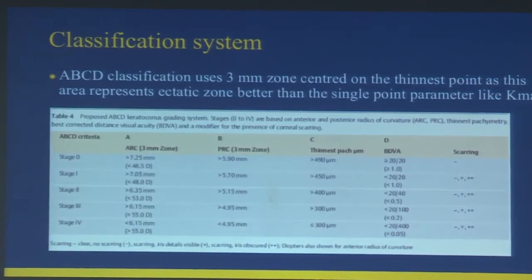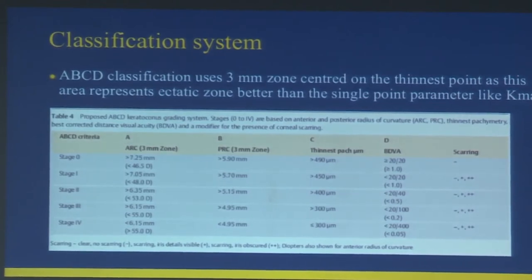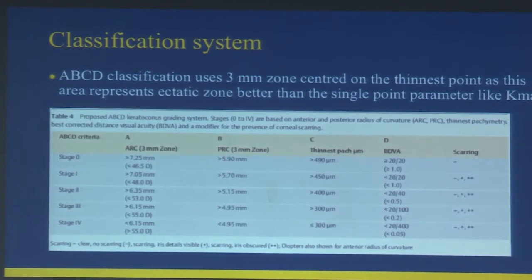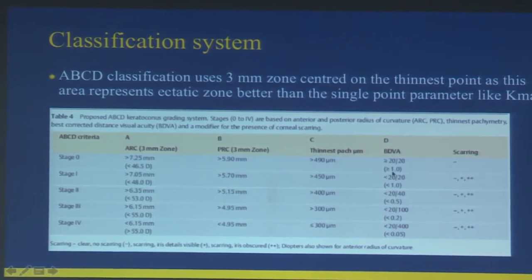Belin then introduced the ABCD classification system. Its advantage is that it doesn't take data from a single point but from a 3mm zone centered on the thinnest point, which better represents the ectatic zone than a single-point parameter like Kmax. A represents the anterior radius of curvature at the 3mm zone, B the posterior radius of curvature, C the pachymetry, and D the best corrected visual acuity.